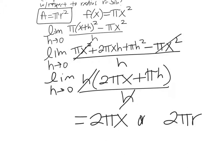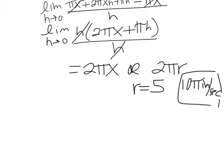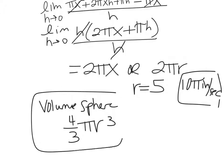Where have you seen 2 pi r before? That's the circumference. The rate of change of area turns into the circumference — we'll learn more about that later. Plug in r equals 5, and the area is changing at 10 pi inches per second, about 31.4. You'll also need to know the volume of a sphere — four-thirds pi r cubed — probably for homework.